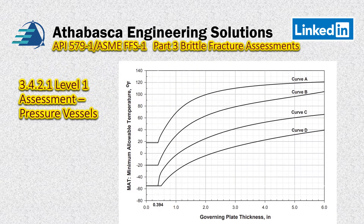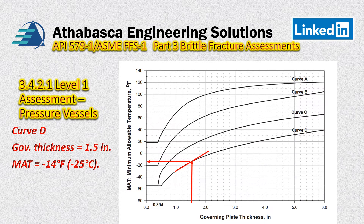Looking at figure 3.4, with our 1.5 inch thickness we go up to Curve D — shown right there — and then we go right across. Our MAT is minus 14 degrees Fahrenheit, or minus 25 degrees Celsius. Curve D, governing thickness 1.5. There are tables also for metric — they call it figure 3.4M for metric.